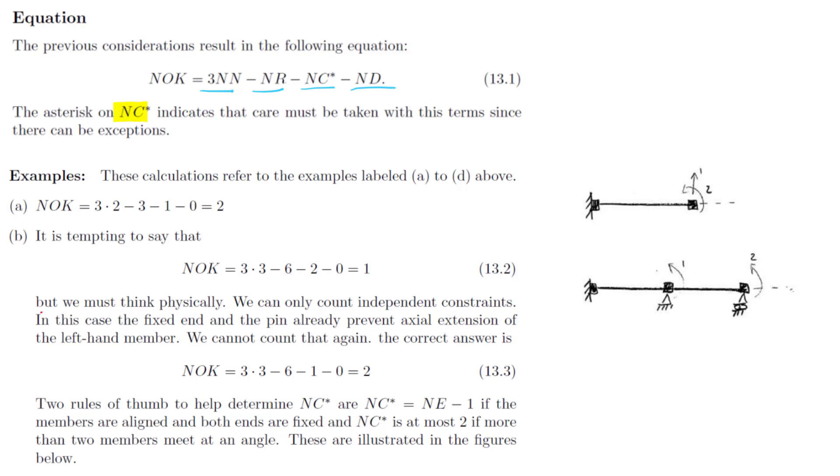Let's look at some examples. In the first example, we argued physically that it has two degrees of freedom: vertical translation of the right-hand node and rotation of the right-hand node. Let's see how the equation works.